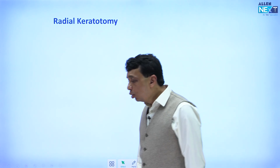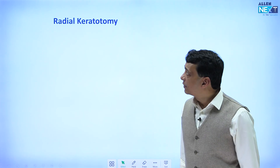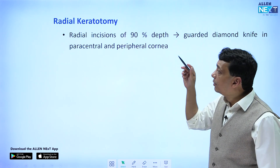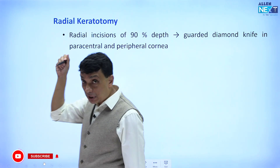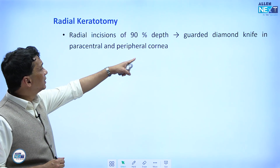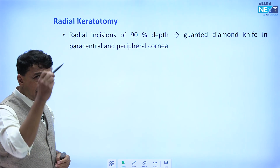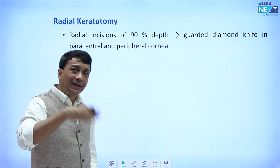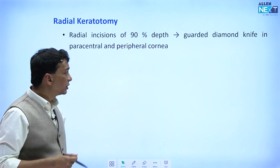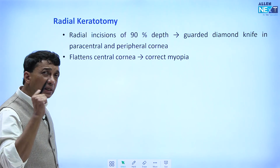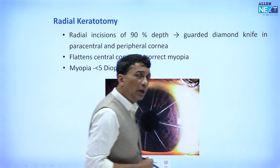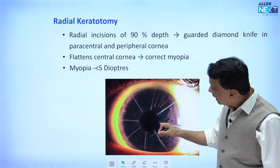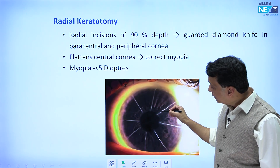Let's start with Radial Keratotomy — the oldest refractive surgery, first practiced in Russia. We make radial incisions at approximately 90% depth into the stroma at radial areas across the cornea, using guarded diamond knives so you do not penetrate into the anterior chamber. This flattens the paracentral and peripheral cornea — the center is spared. By flattening the peripheral and paracentral cornea, it corrects myopia, typically used for less than minus 5 diopters, with approximately 8 radial cuts sparing the pupil.